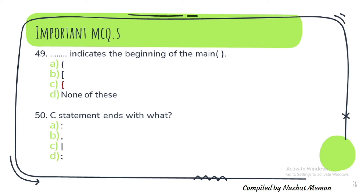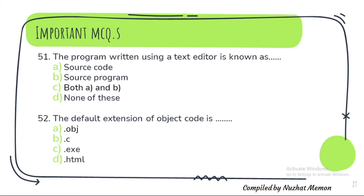Question 50: A C statement ends with what? It ends with a semicolon. Question 51: The program written using a text editor is known as both A and B — that is source code and source program. Question 52: The default extension of object code is .obj — option A.